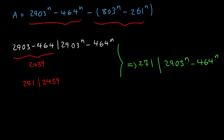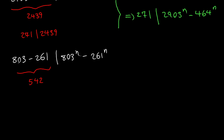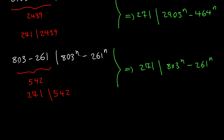Next, let's deal with these two terms. We can write that 803 minus 261 divides 803 to the nth power minus 261 to the nth power. The left hand side is 542, which is 2 times 271. Therefore, 271 divides 542, and putting these together, 271 divides 803 to the nth power minus 261 to the nth power.